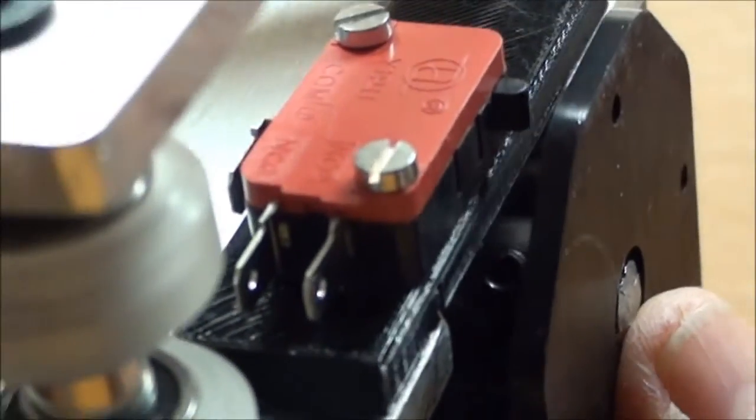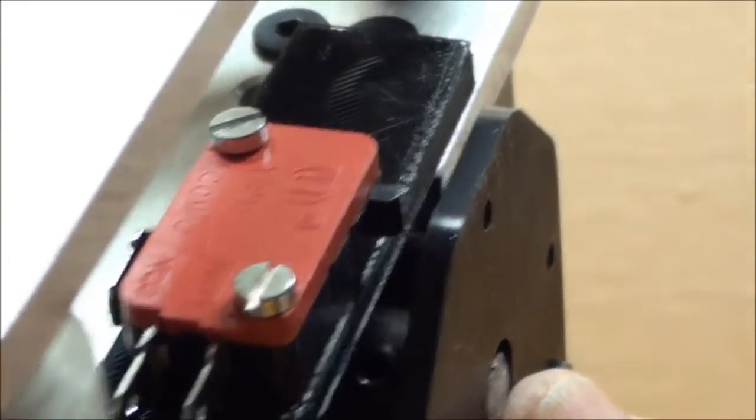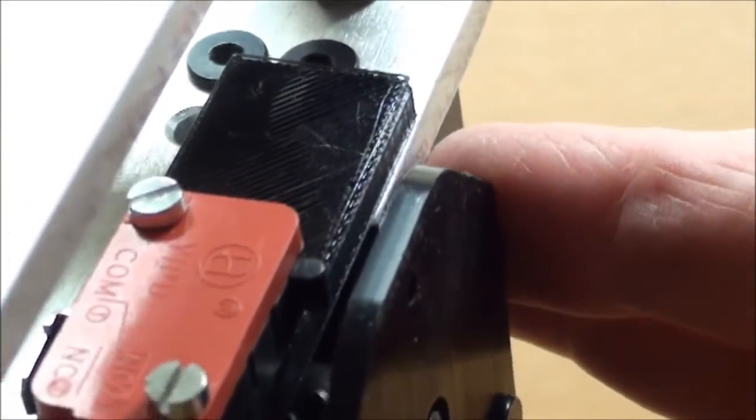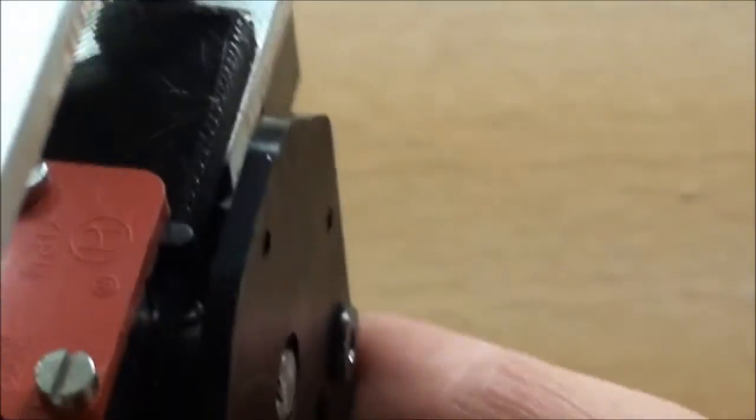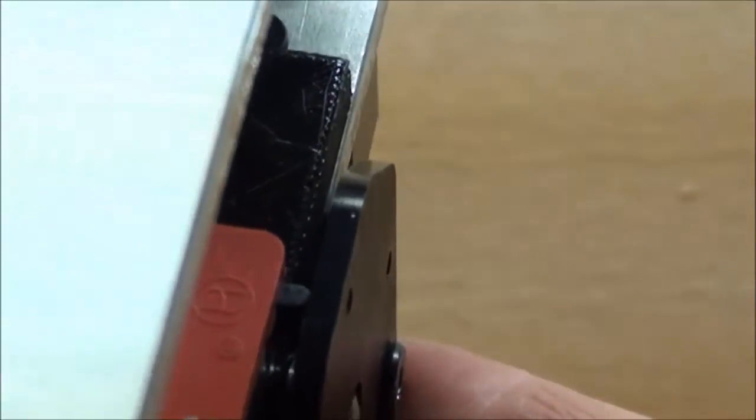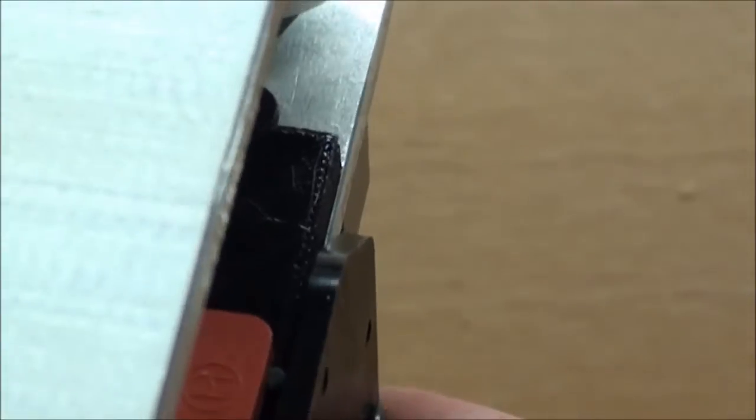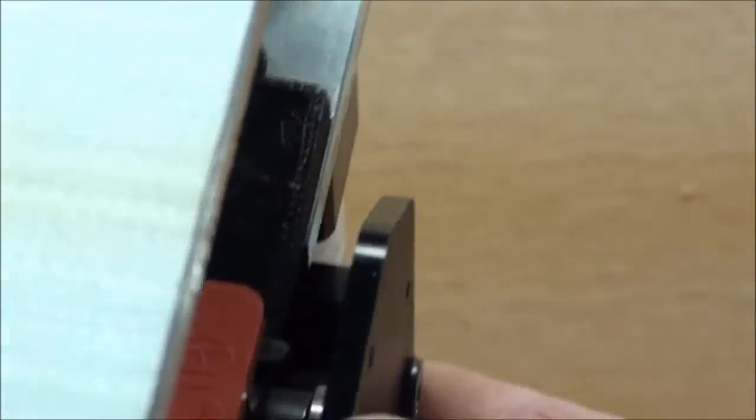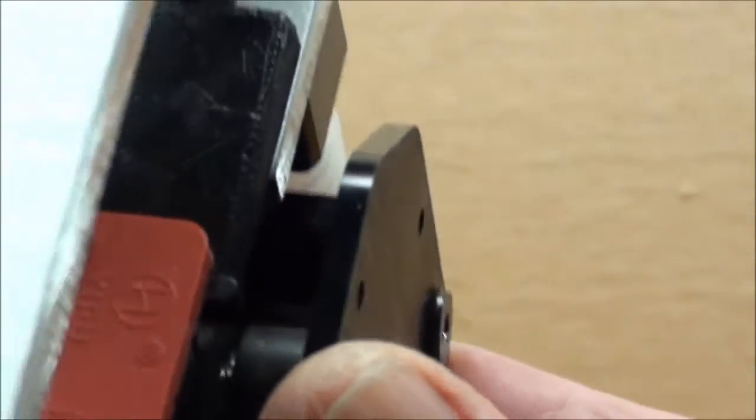And of course, then if we turn it around, so you can see the limit switch on the bottom side here. So if you lower the spindle, you have it. So this will be a nice way to have a Z limit switch sitting, not in the way of anything.